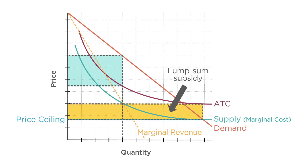A lump sum subsidy doesn't depend on how much the firm is producing. So unlike a per-unit subsidy or tax, a lump sum subsidy won't affect any of the marginal cost or revenue curves. Its effect on the firm is simply to lower its fixed costs and keep it in business after the government puts a ceiling on the price it can charge consumers.